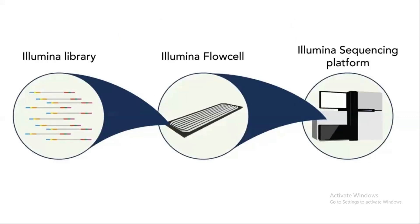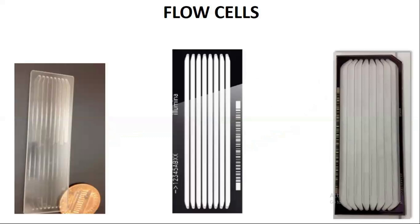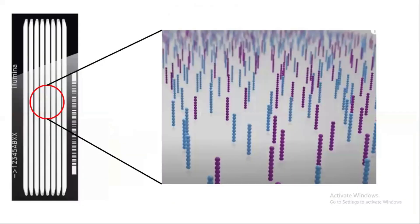There are three categories in Illumina technology: the Illumina library, Illumina flow cell, and Illumina sequencing platform. I discussed library generation in the previous video. Now we will discuss flow cells. Flow cells are a specific type of chip on whose surface all sequencing is performed. Taking a small portion of this chip, you can see that on the floor of the flow cell there are millions of short nucleotide probes — we can also call them oligonucleotides — that are fixed to the floor of the flow cell.